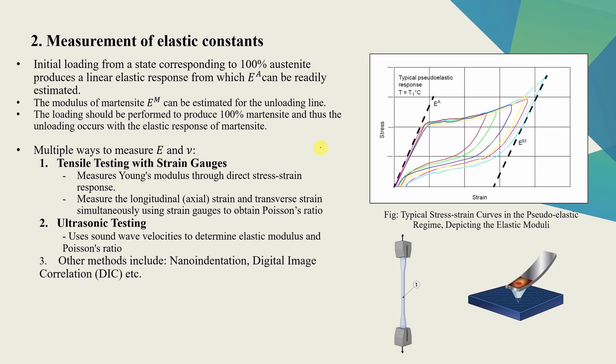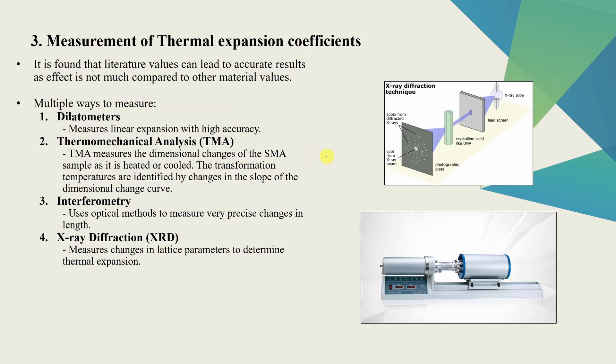Next, measurement of elastic constants. This can be done using tensile testing or some other methods such as nano indentation. But the important point here is initially during the loading, we can get austenite elastic properties and we have to keep loading until 100% of austenite is transformed to martensite. And then when we perform unloading, we can get elastic properties for martensite.